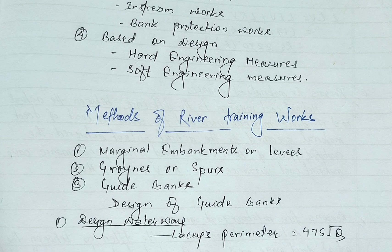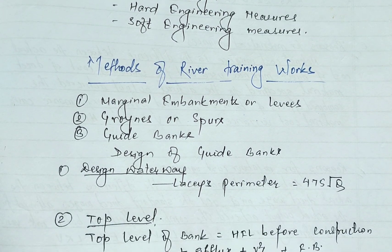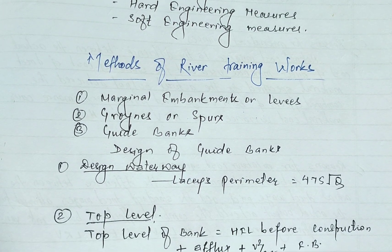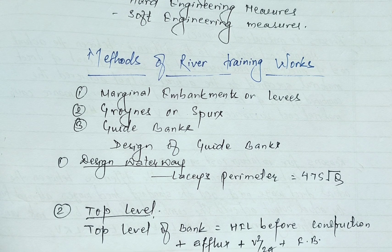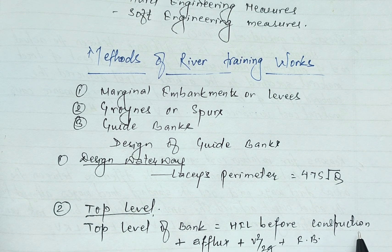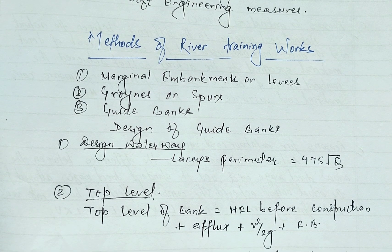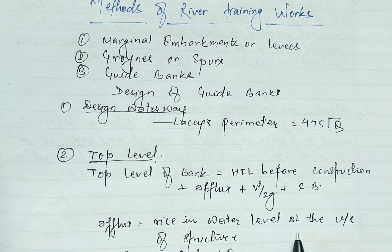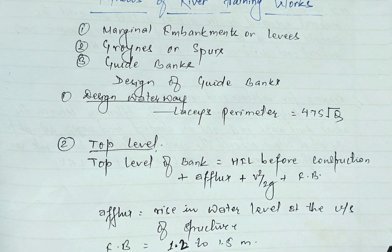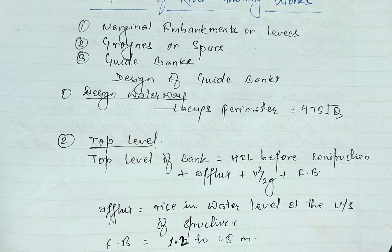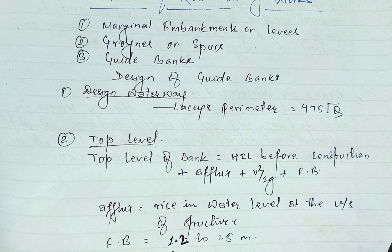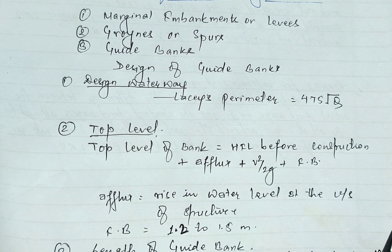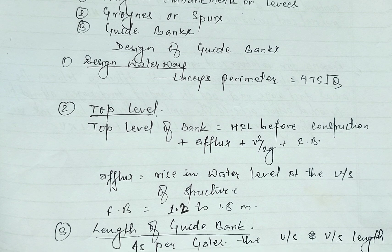In the second step, we determine the top level of the bank: top level equals high flood level before construction plus afflux plus V squared by 2g plus freeboard, where afflux equals the rising water level at the upstream of structures and the freeboard can be taken as 1.2 to 1.5 meters.